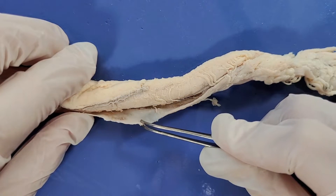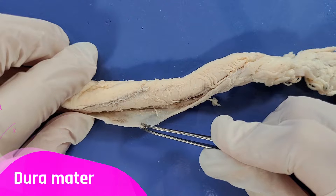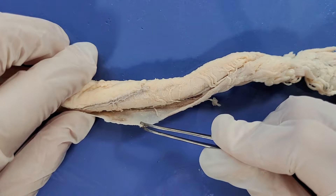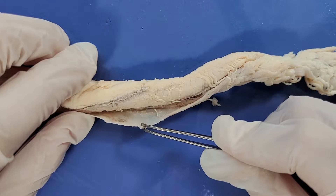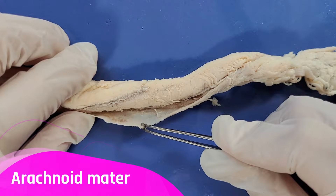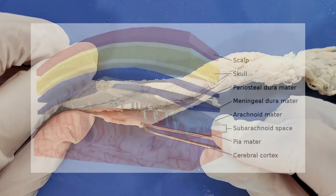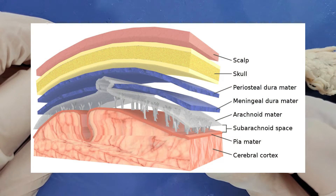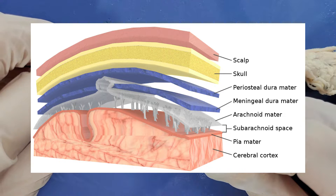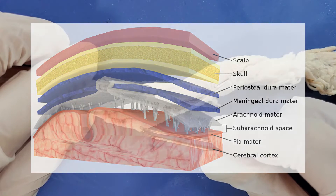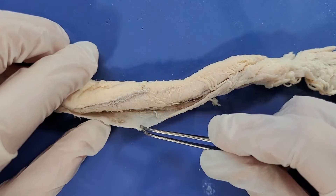The outermost layer is called the dura mater and it's a thick, tough layer as you can see here. The middle layer is called the arachnoid mater, which is a delicate spiderweb-like layer. The arachnoid mater is ballooned up very closely against the dura mater — it's actually so thin and so close to the dura mater that it won't really be visible, but it will be located right below the dura mater around here.